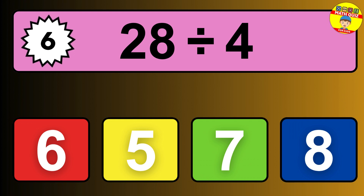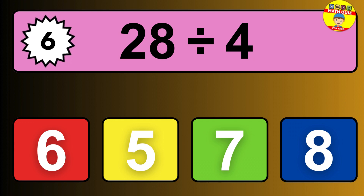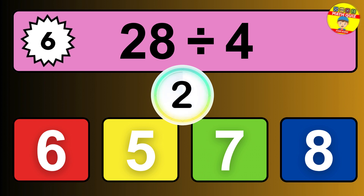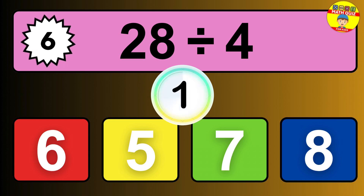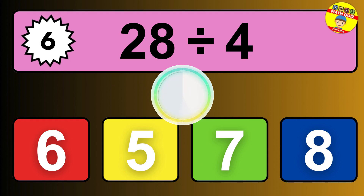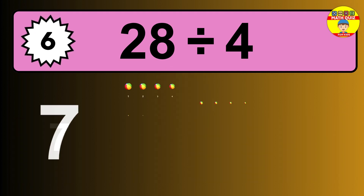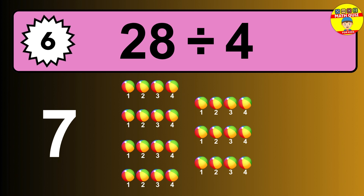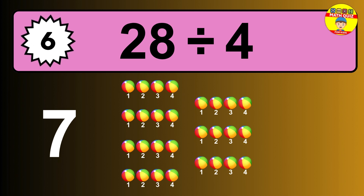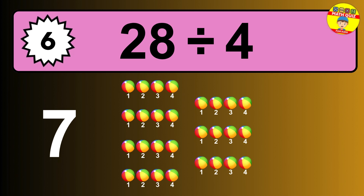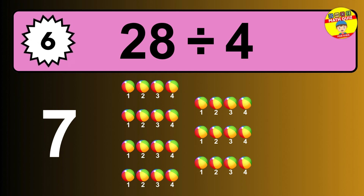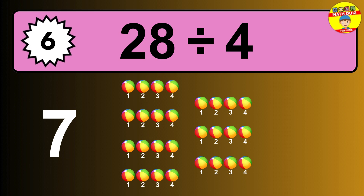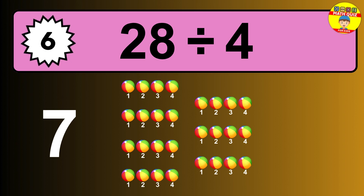28 divided by 4 is... time to think. Let's go to the solution. Divide the number 28 by 4. Each group contains 4 units. So dividing 28 by 4 results in 7 equal groups. Thus, the result is... 28 divided by 4 equals 7.